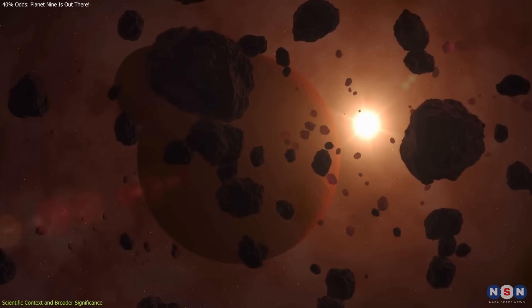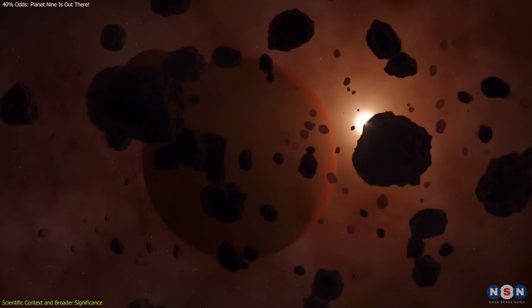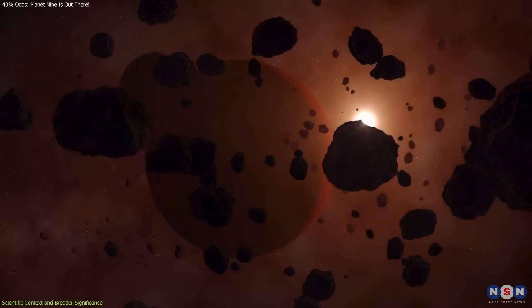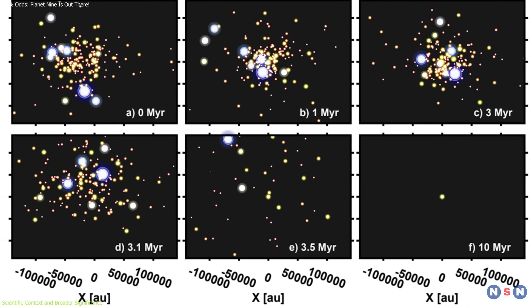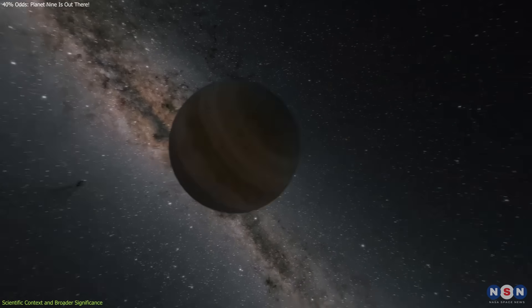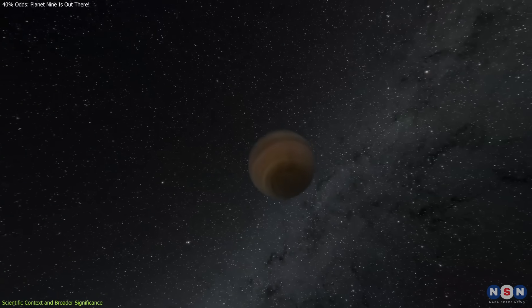The idea of Planet 9 was originally proposed to explain these orbital anomalies. The new simulations support the possibility that such a planet could naturally end up in a position to exert that influence.